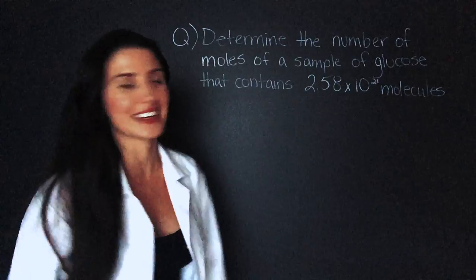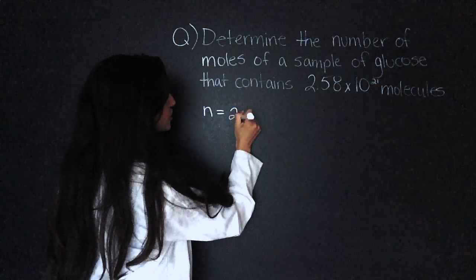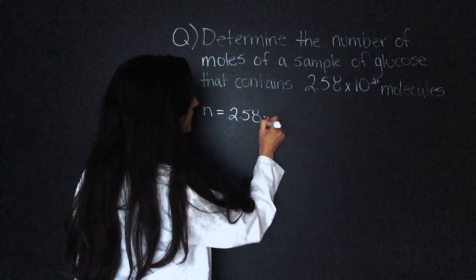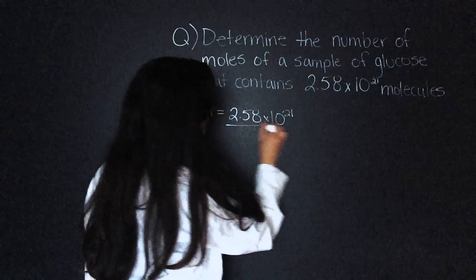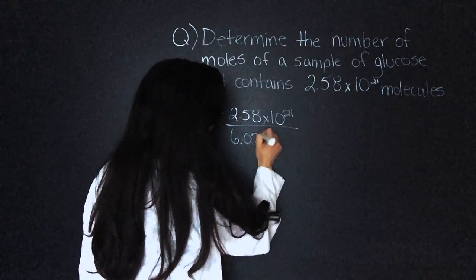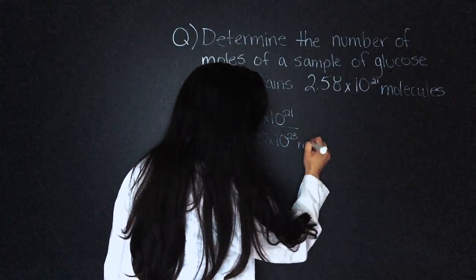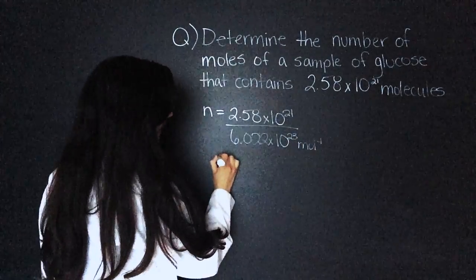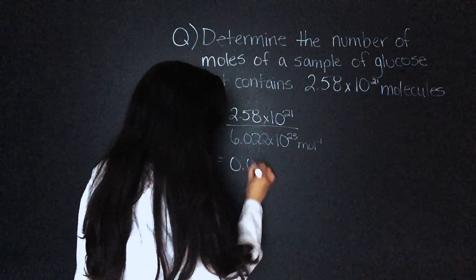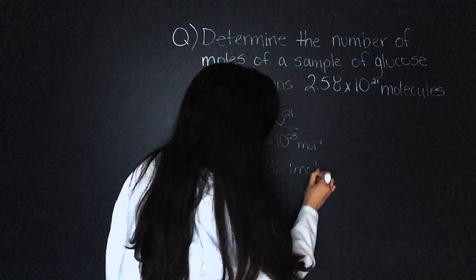All we have to do is plug it in. Moles equals number of molecules 2.58 times 10 to the 21 divided by Avogadro's number 6.022 times 10 to the 23 mole to the negative 1. That equals 0.00429 moles.